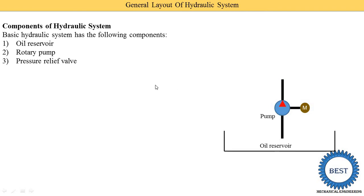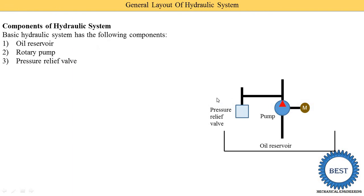The third component is the pressure relief valve. The pressure relief valve is generally installed at the outlet of the pump because it is used to control pressure. It is installed here — that is called the pressure relief valve.